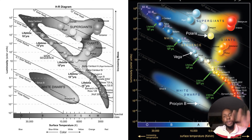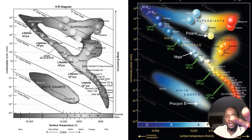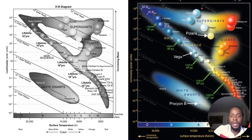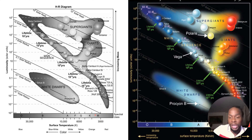I've also provided a more colorful version of the HR diagram which should help bring the concept home. To the right you have more red, in the middle you have yellow and white and bluish-white, and all the way to the left you have blue colors. Those blue stars are way hotter, having temperatures of 30,000 Kelvin or higher, while on the right side the red stars have lower temperatures as low as 3,000 Kelvin.